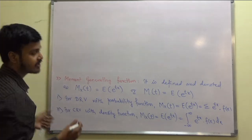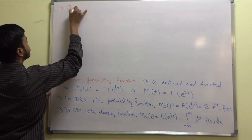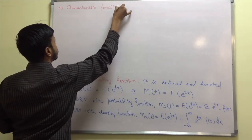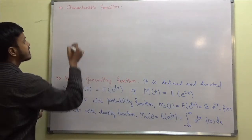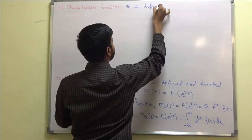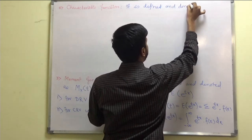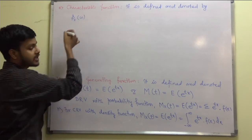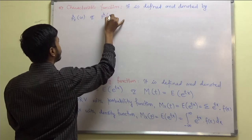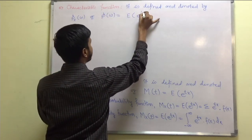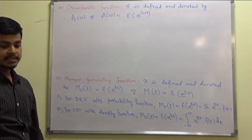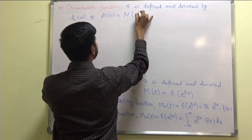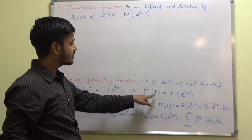The characteristic function is defined and denoted by phi_x(omega), and is given by the expectation of e^(i omega x). It can also be written in terms of the moment generating function: if the MGF uses e^(tx), then the characteristic function replaces t with i*omega to give e^(i omega x).